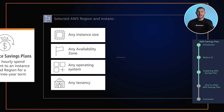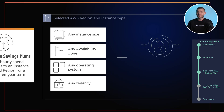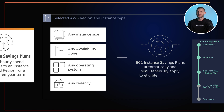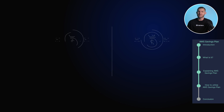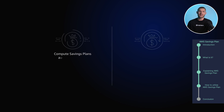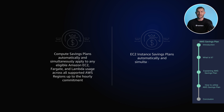Next, flexibility. AWS Savings Plans allow you to apply the savings across different EC2 instance types, sizes, and regions. This helps you optimize your usage based on your specific needs while still enjoying cost savings. And the best part? The discounts are automatically applied to eligible usage.